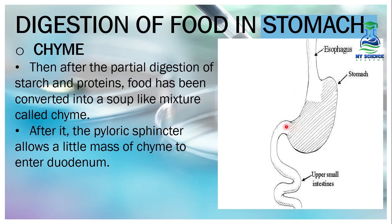After chyme is formed, the pyloric sphincter, which is the muscular opening between the stomach and the small intestine, allows a little mass of chyme to enter the duodenum of the small intestine.